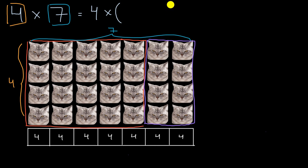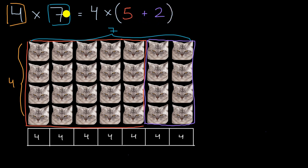One way to think about it is: four times seven is the exact same thing as four times — and I'm going to use parentheses, which just means do that part first — four times five plus two, because that's what seven is. So four times seven is the same thing as four times (five plus two), and five plus two is indeed equal to seven. We can see that is equivalent to the total number of cats.